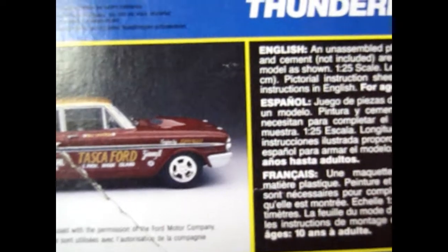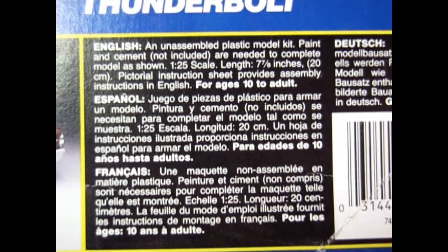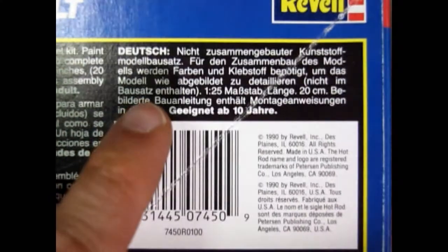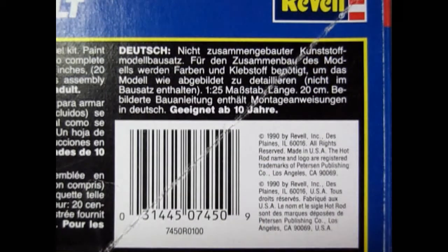Here is the other side of the box. There we've got our side view of the Tasca Ford Thunderbolt. It will say in English an unassembled plastic model kit. Paint and cement not included. 1:25th scale, length 7 7/8 inches, 20 centimeters. This model came out in 1990 by Revell.